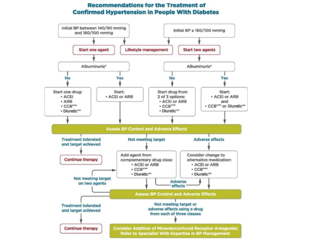If the blood pressure is well below 140/90, then you continue the ACEI or the ARB. However, if the patient's blood pressure is not coming down, then along with the ACEI or ARB you either give a CCB or a diuretic. For example, if I have given the patient enalapril and the blood pressure has not come down, then I can give the patient losartan, or verapamil, or spironolactone — any one of these can be given.